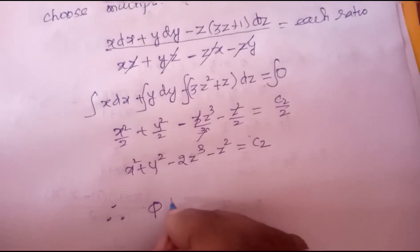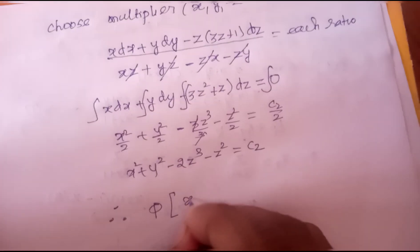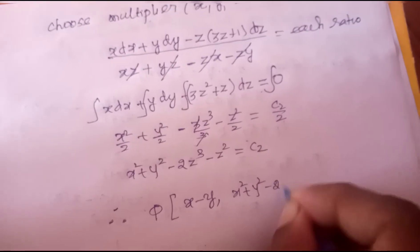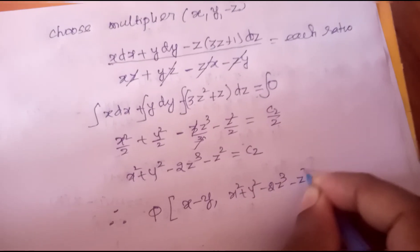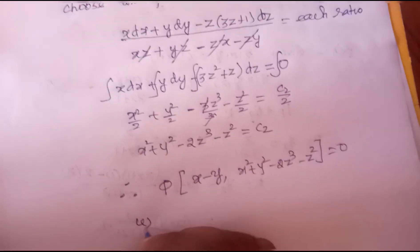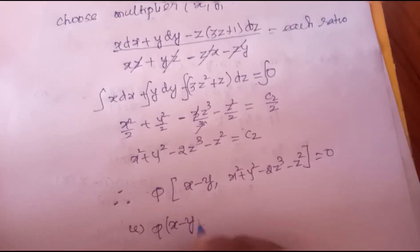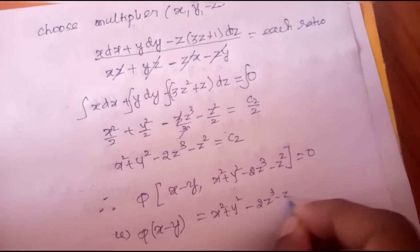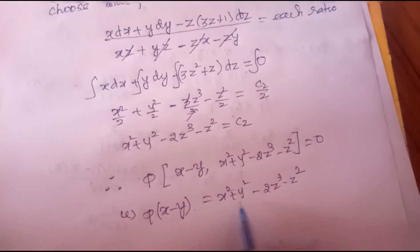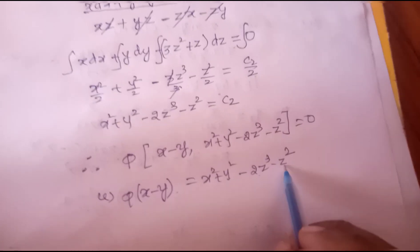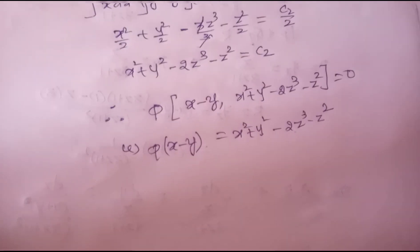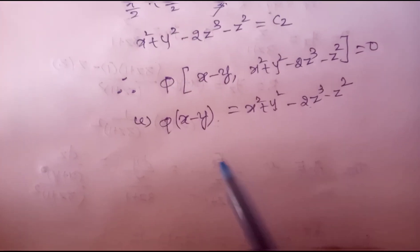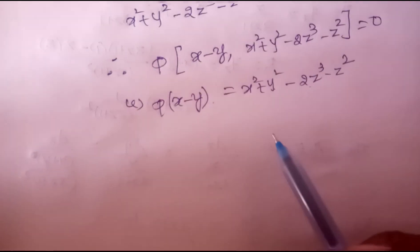Therefore the general solution is φ(c₁, c₂) = 0, that is φ(x - y, x² + y² - 2z³ - z²) = 0. This can be written as: φ(x - y) = x² + y² - 2z³ - z². These are the surfaces orthogonal to the given system.